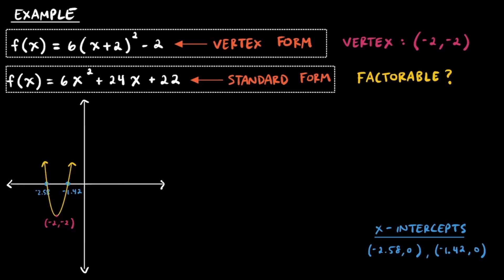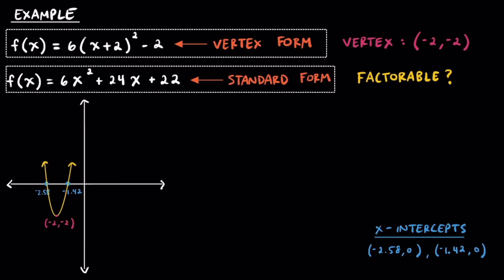From our original form, we knew the vertex was (-2, -2), and now let's talk about some intervals. Keep in mind that we can't find out intervals unless we know what the x-intercepts are, which is why we did all that work just a moment ago.